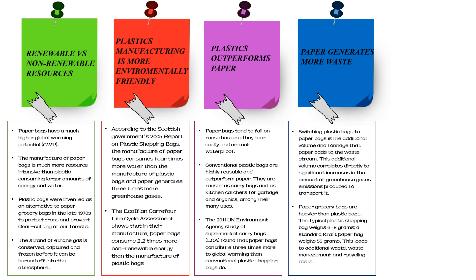The most significant and immediate impact of a switch from plastic to paper grocery bags is the additional volume and tonnage that paper adds to the waste stream. This additional volume correlates directly to a significant increase in greenhouse gas emissions produced to transport it. Paper grocery bags are heavier than plastic bags — a typical plastic shopping bag weighs around 6 to 8 grams, while a standard kraft paper bag weighs 55 grams. This leads to additional waste, waste management, and recycling costs.